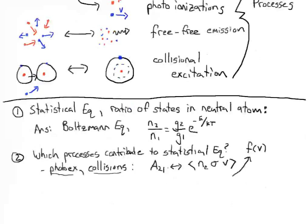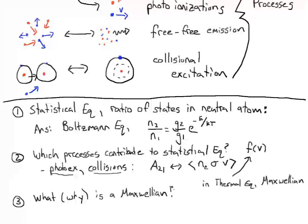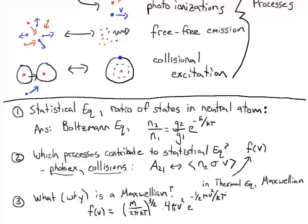What is f(v) typically? Well, in kinetic equilibrium, or thermal equilibrium, it's a Maxwellian. What is a Maxwellian? It's a distribution described by f(v) = (m / 2πkT)^(3/2) times 4πv², times e to the minus (1/2)mv² over kT. That's what a Maxwellian is.